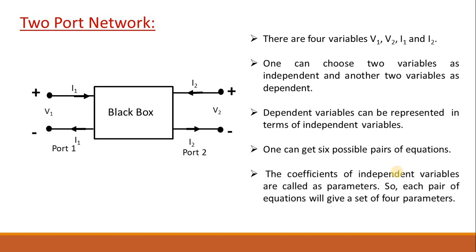One can get six possible pairs of equations. From these equations, the coefficients of the independent variables are called parameters. So for each pair of equations, we will get a set of four parameters. These parameters are called Z-parameters, Y-parameters, or H-parameters, depending upon what kind of variables we are choosing for the independent and dependent categories.